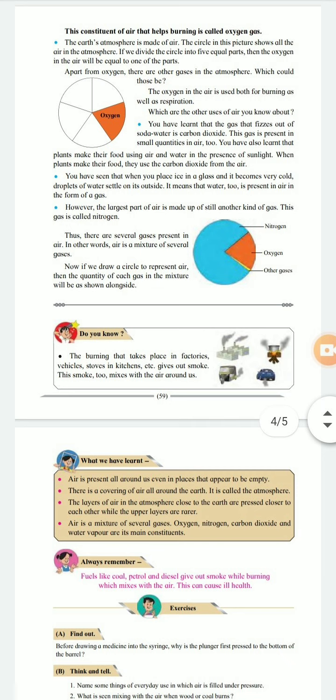What we have learnt? Air is present all around us, even in places that appear to be empty. There is a covering of air all around the earth. It is called the atmosphere. The layers of air in the atmosphere close to the earth are pressed closer to each other while the upper layers are rarer. Air is a mixture of several gases. Oxygen, nitrogen, carbon dioxide and water vapour are its main constituents.